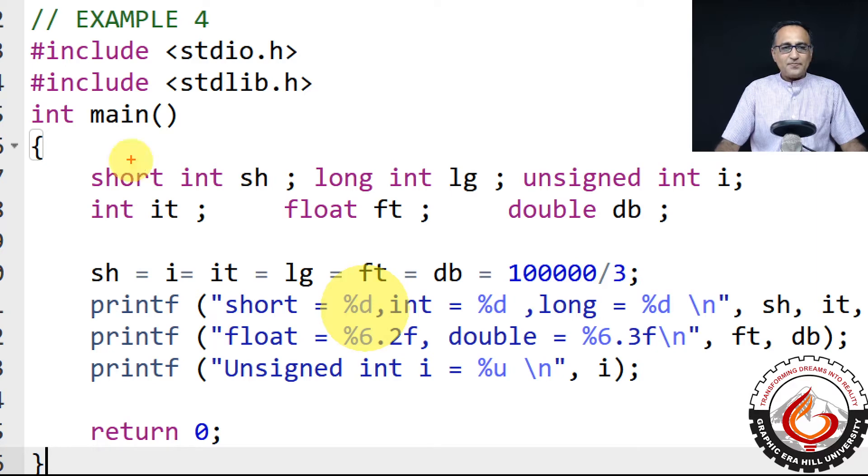In this particular example, what I'm going to do is show you again an overflow operation. But in this case, the overflow happens only for the short data type, because I'm assigning the result of the division to the short at the very end.